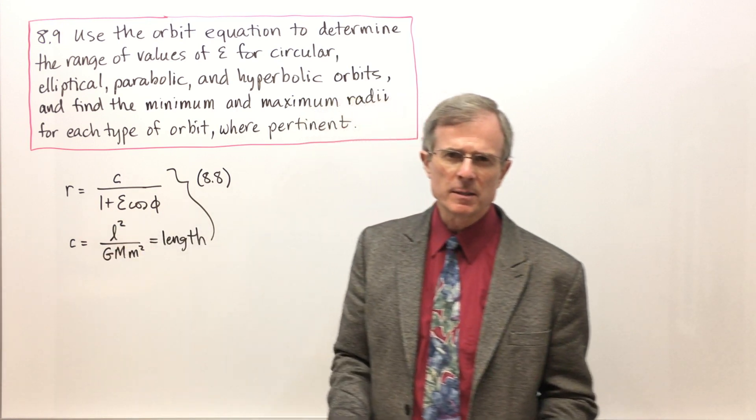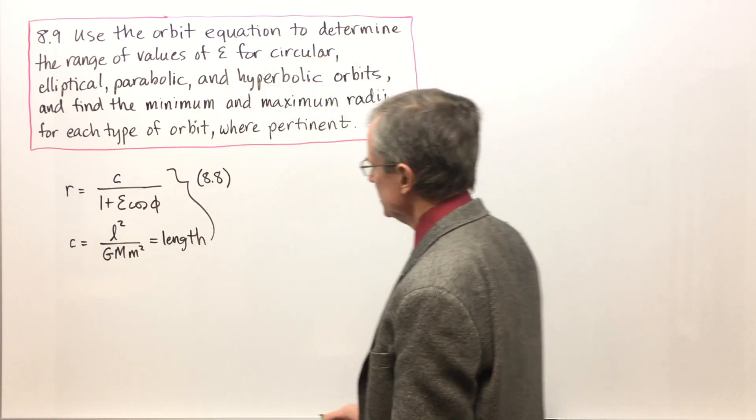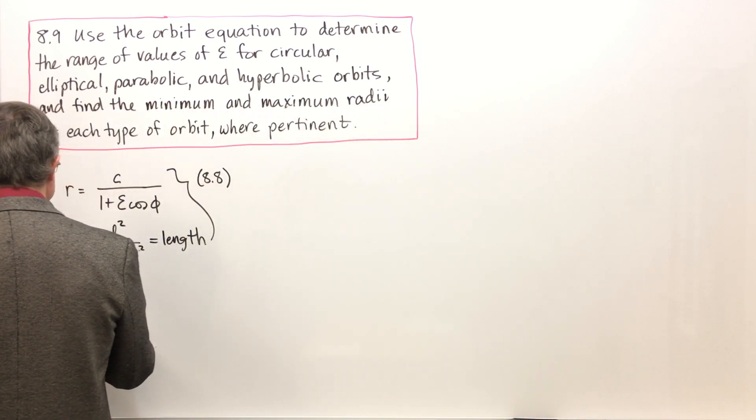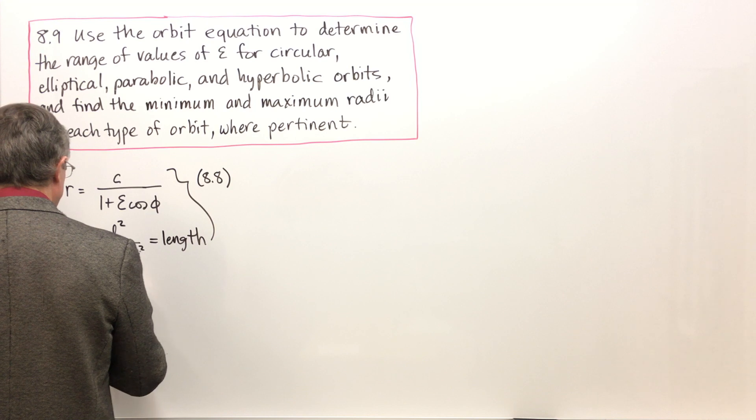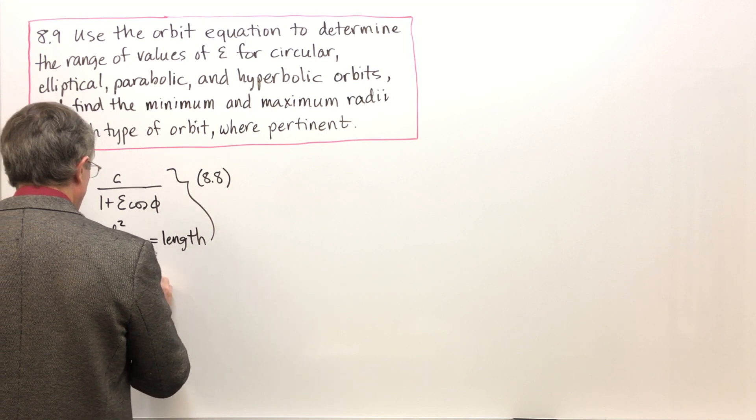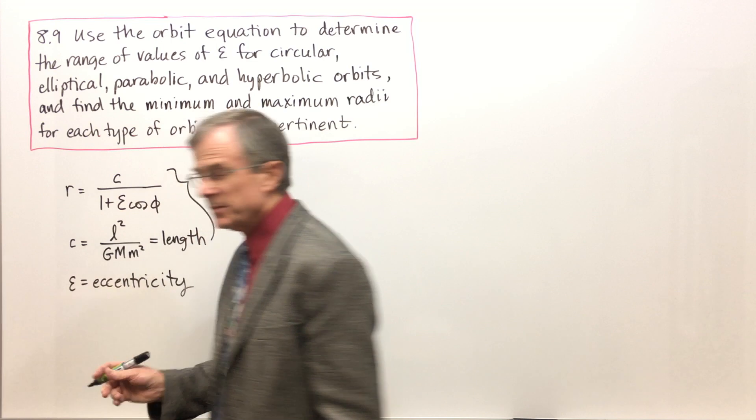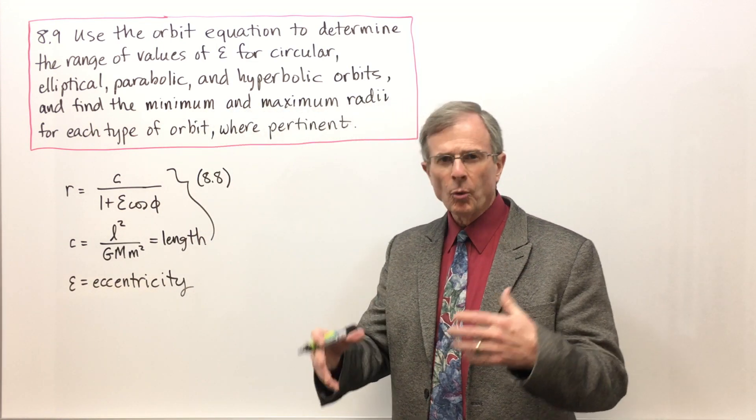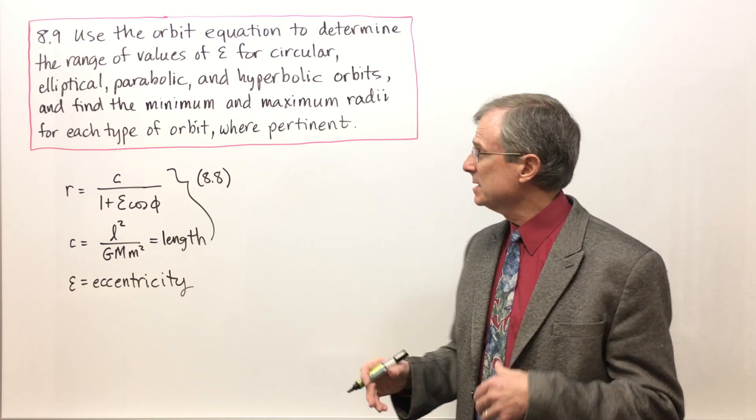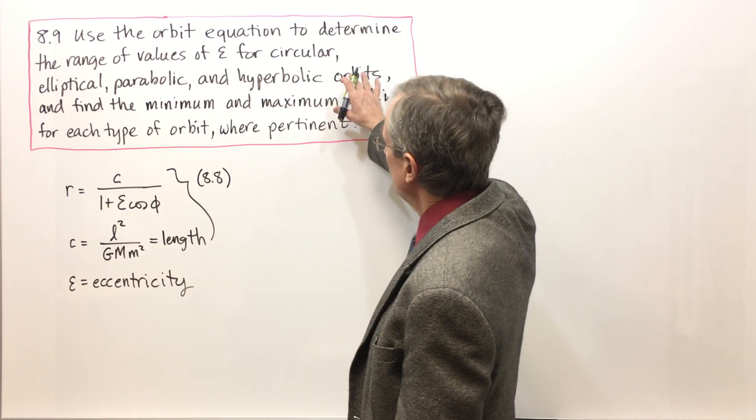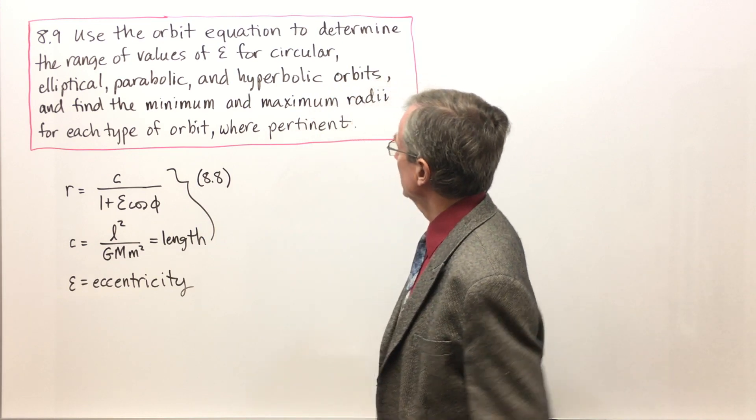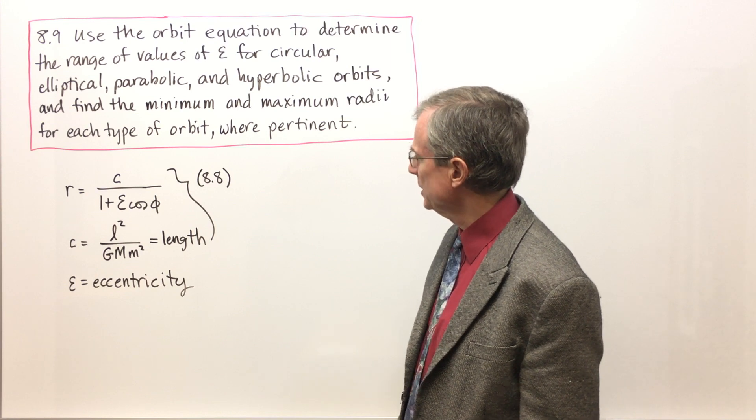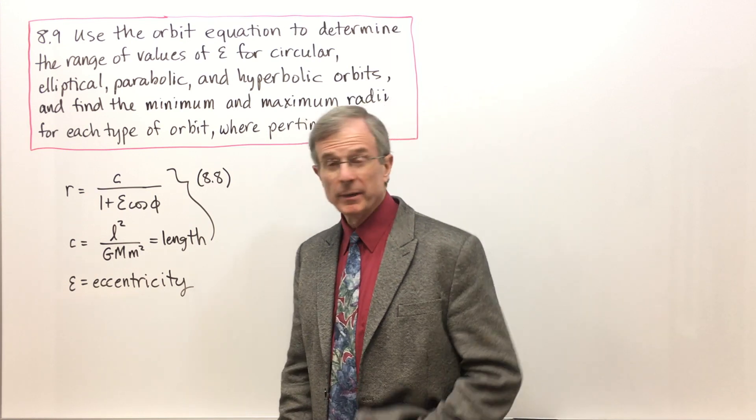At the end of that concept we found that there was an arbitrary constant epsilon which we call the eccentricity, as yet undetermined. We're going to explore different values of epsilon and see which coincide with circular, elliptical, parabolic, and hyperbolic orbits, and find the minimum and maximum radii for each type of orbit where they pertain.